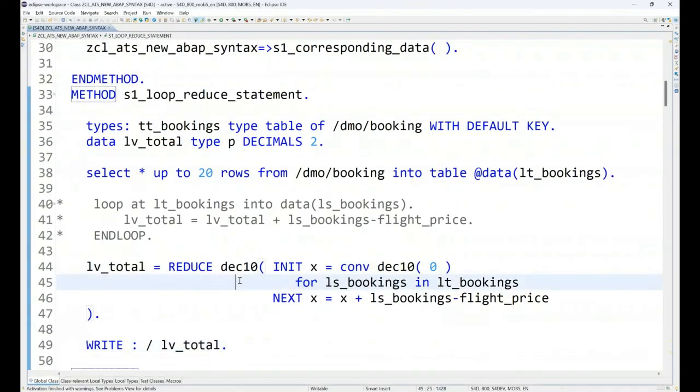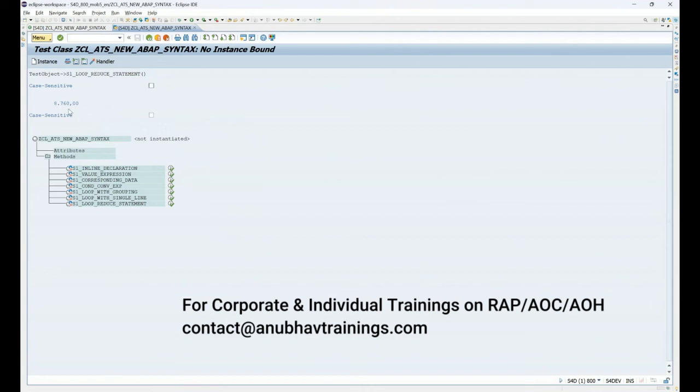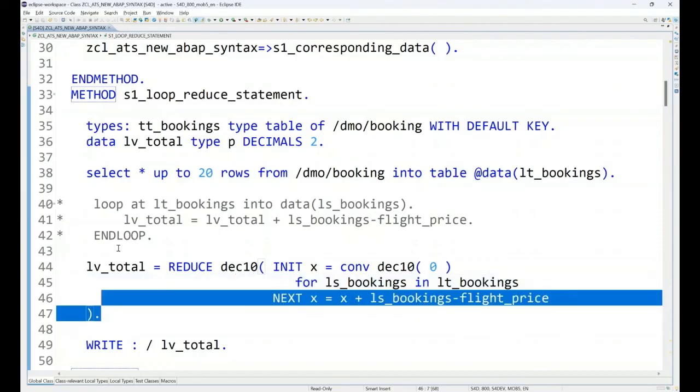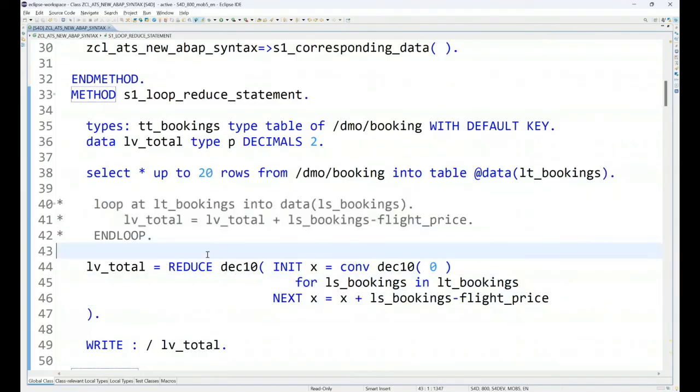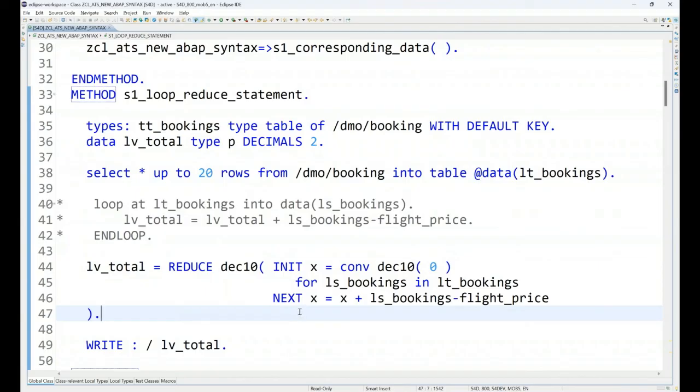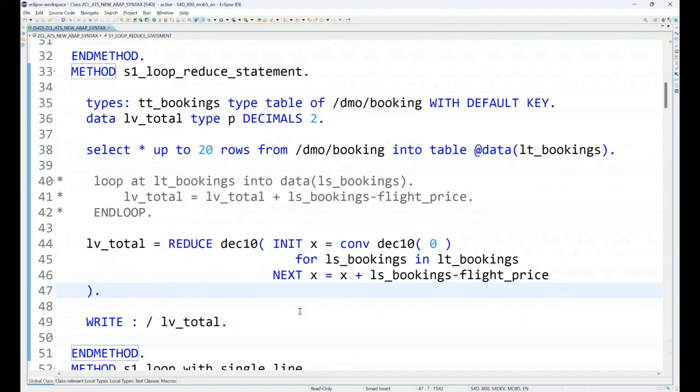So let's activate this, and when we run we should be getting the same amount. You can see it, 8760 is the amount which we are getting in the output. So instead of writing multiple lines of code, it is all done in one single line with the help of reduce statement in ABAP. So that's another very powerful statement what we can use in advanced ABAP.